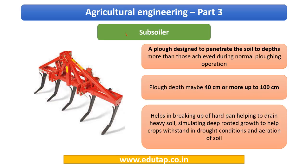The subsoiler has long, sharp penetrating structures and a plowing depth of 40 centimeters or more, up to a maximum of 100 centimeters. This implement is specifically designed to go to a greater depth than conventional plows — an important distinguishing characteristic.